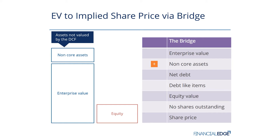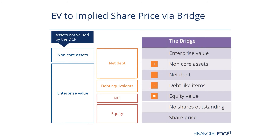We then subtract off net debt — that's your total debt minus cash. You then subtract off debt equivalents, or debt-like items, and subtract off your non-controlling interests, NCI, sometimes called minority interests. That will then get us to our equity value.